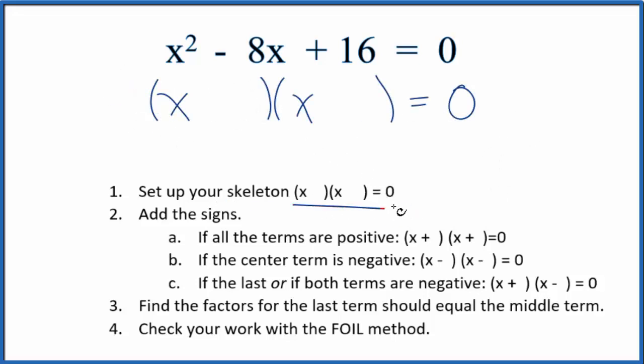So we have this skeleton here, and now we can add the signs in. In this case, we have this central term here, it's negative. If the center term is negative, we'll just have negatives in this equation here. So we're just going to put a negative here and a negative here.